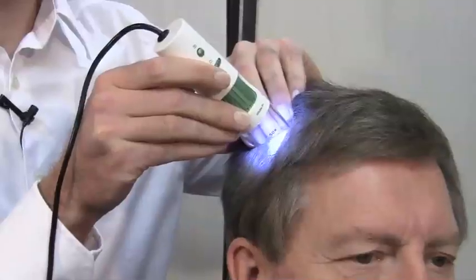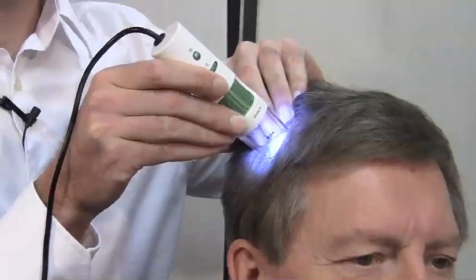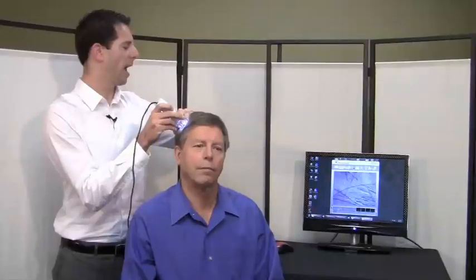Once you have got an image that you approve of and that looks good for examining density, you touch the capture button on the D-Lite microscope. And now that image is saved on the computer for comparison.